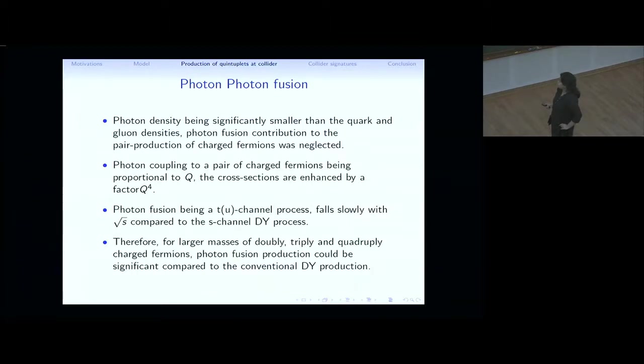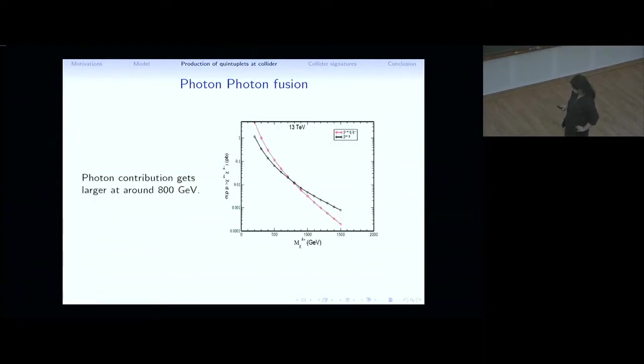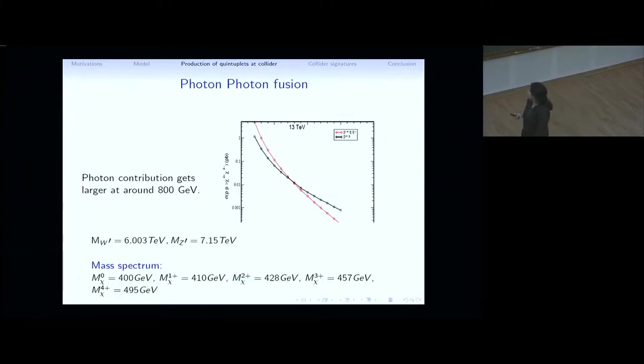When you have Q equals to four, three or two, this is a significant enhancement in the cross-section. Also, photon fusion being a T or U-channel process, it falls slowly with the center of mass energy compared to the S-channel Drell-Yan processes. That's why we have considered the importance of this photon-photon fusion to study the collider phenomenology of this model. And for larger masses like doubly, triply and quadruply charged fermions, photon fusion process can be significant compared to the conventional Drell-Yan production and that I have shown here. This is a plot for the cross-section of PP goes to four plus four minus in picobarn and how it varies with its mass. The red curve shows you the Drell-Yan cross-section and the black curve shows you the photon fusion contribution.